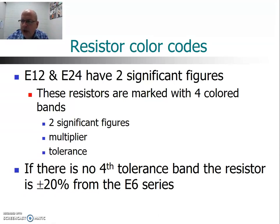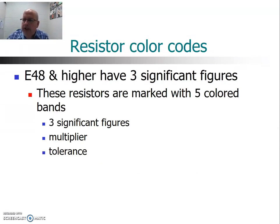To identify resistor values, resistors have colored stripes. The E12 and E24 have two significant figures, so they are color coded with four colored bands: the first two represent the two significant figures, the third is the multiplier, and the last is the tolerance. If there's no tolerance band, that generally indicates plus or minus 20%, which is the E6 series. Resistors with five colored bands belong to the E48 or higher series — those five bands represent three significant figures, plus a multiplier and a tolerance. That's why some resistors have four colored bands and some have five.